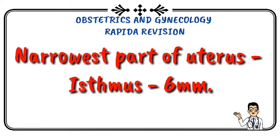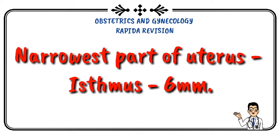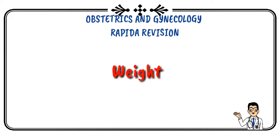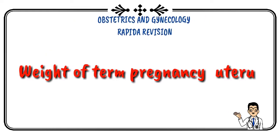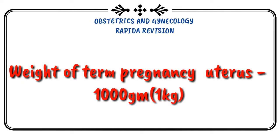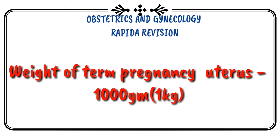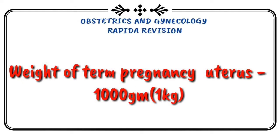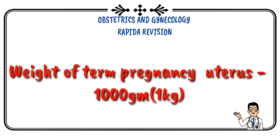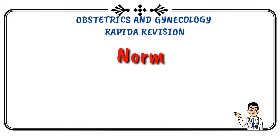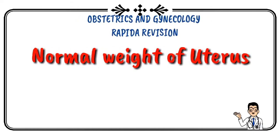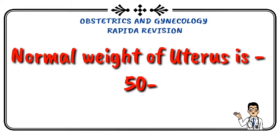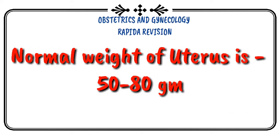Weight of the uterus at term pregnancy is 1000 grams (1 kilogram). Normal weight of the uterus is 50 to 80 grams.